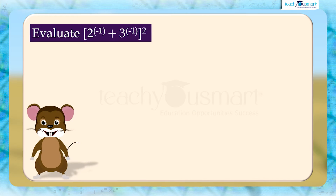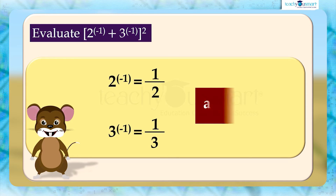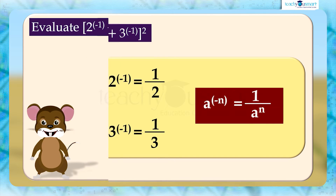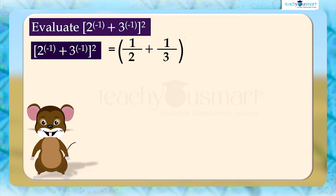Here we can write: 2 raised to minus 1 equals 1 by 2, and 3 raised to minus 1 equals 1 by 3, since a raised to minus n equals 1 by a raised to n. Therefore, 2 raised to minus 1 plus 3 raised to minus 1, the whole square, equals 1 by 2 plus 1 by 3, the whole square.